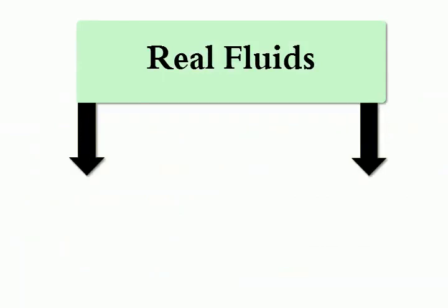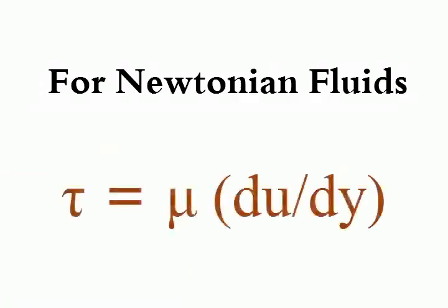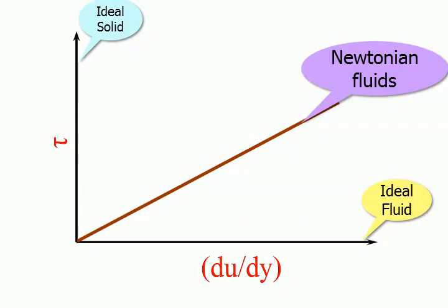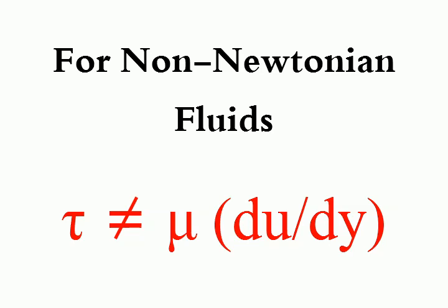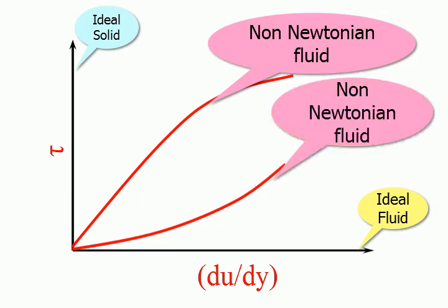Real Fluids having viscosity are divided into two groups: Newtonian and Non-Newtonian Fluids. In Newtonian Fluids, a linear relationship exists between the magnitude of the applied shear stress and the resulting rate of deformation. In Non-Newtonian Fluids, the viscosity will vary with variation in the rate of deformation, and a linear relationship between shear stress and rate of deformation does not exist.